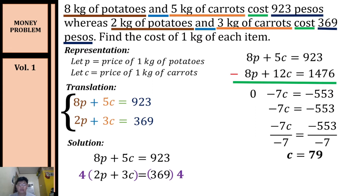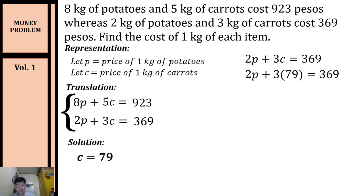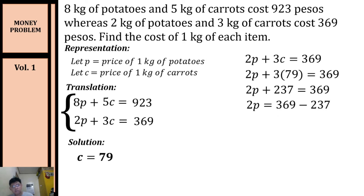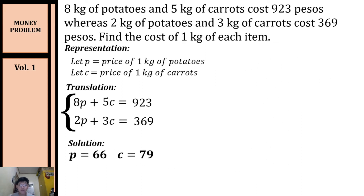Now that we have the price for one kilogram of carrots, we can solve for p by substituting c into our second equation. Replacing c with 79: 3 times 79 equals 237. Transposing 237 to the other side: 369 minus 237 gives us 2p = 132. Dividing both sides by 2, p = 66. The price of one kilogram of potatoes is 66 pesos.